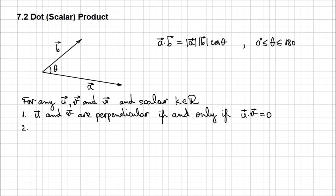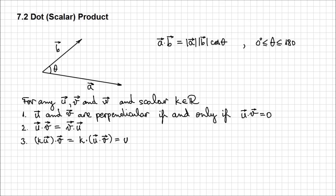The second property is the commutative property: the dot product between U and V is equal to the dot product between V and U. The third property: the dot product between KU, a scalar multiple of a vector, and V is equal to K times the dot product between U and V. Or equivalently, it equals U dot product with KV. That's possible due to the associative property of the dot product.